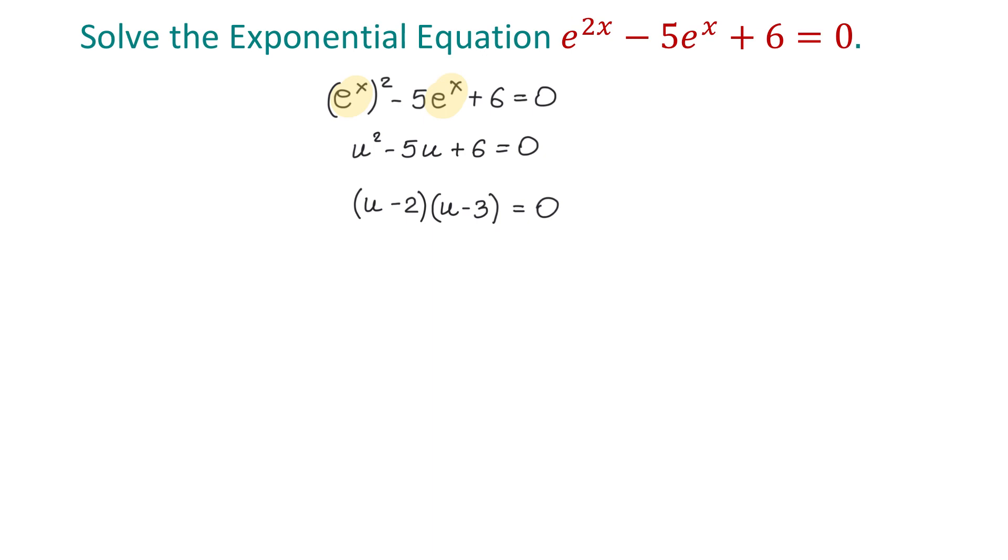Here we have a product that is equal to 0. We will use the zero factor property to rewrite this as u minus 2 equals 0 or u minus 3 equals 0.